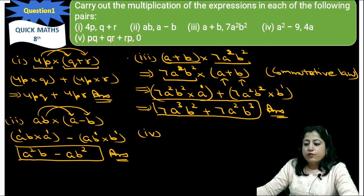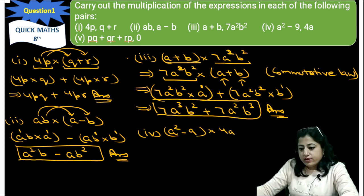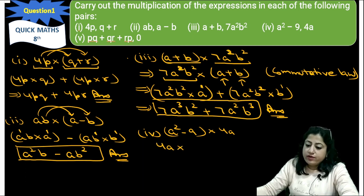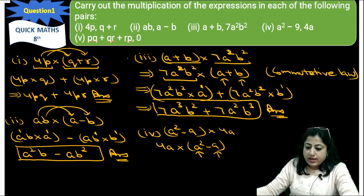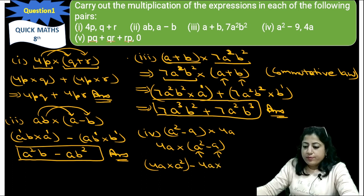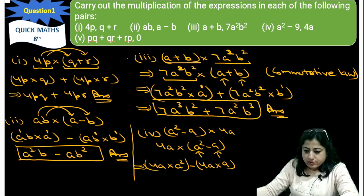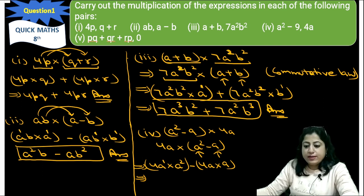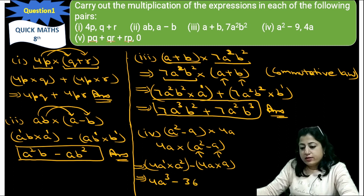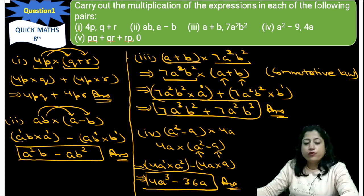Now come to the fourth part: (a² − 9) × 4a. Similarly, using commutative law, we can write 4a in front and then (a² − 9). So 4a will multiply with a² first and then with −9: 4a × a² minus 4a × 9. The answer will be — a raised to power 1 multiplied with a raised to power 2 gives a raised to power 3 — so 4a³ − 36a. This is the required algebraic expression and the solution for the fourth part.